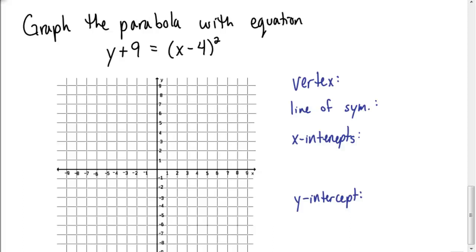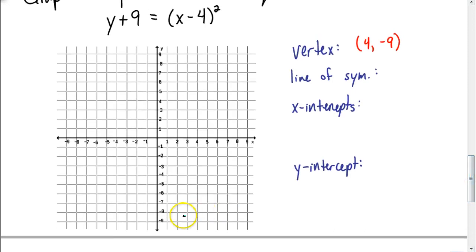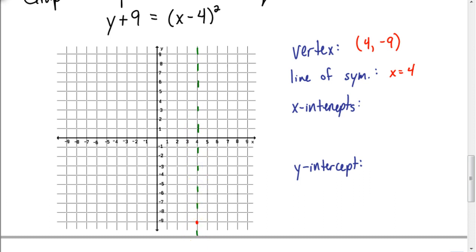Let's see how you did. First, the vertex — it's going to be positive 4 and negative 9. So graphing (4, negative 9) places it down here. That means the line of symmetry is the equation x equals 4, so we draw a dashed line there as a reference in case we need to reflect any points over it.